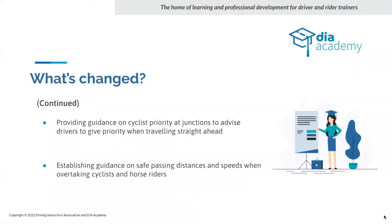What's changed: providing guidance on cyclist priority at junctions to advise drivers to give priority when traveling straight ahead. Also establishing guidance on safe passing distances and speeds when overtaking cyclists and horse riders — we need slightly more clearance at 30 mph, and more at higher speeds.